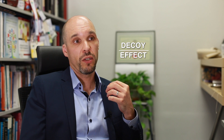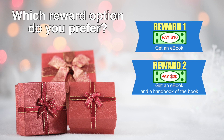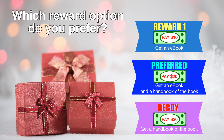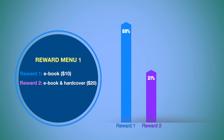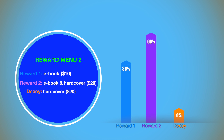Next, we looked at the decoy effect. A decoy is an option that normally no one would choose, but that actually makes another option look more attractive. So just by adding a decoy reward next to our preferred reward, we could actually shift people's backing behavior so that significantly more people chose our preferred reward.